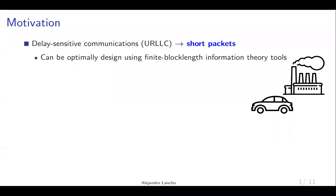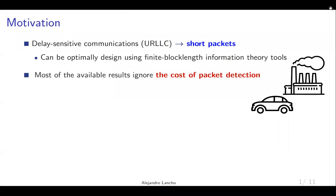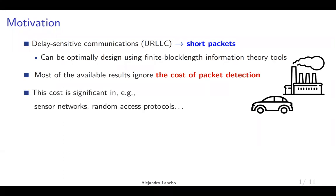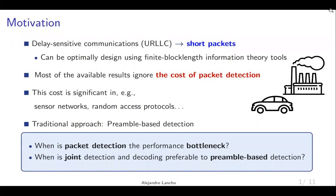One of the big groups of services that will dominate the next generations of wireless communication systems, sometimes referred to as ultra-reliable low-latency communications, presents stringent latency constraints which require the use of short packets. During the last years it has been shown how to optimally design short packet communications by means of finite blocklength information-theoretical tools. However, most of the available results ignore the cost of packet detection, that is the cost of distinguishing noise from an incoming data packet. In some applications such as sensor networks or random access protocols, this cost is significant. The traditional approach to tackle this problem is to use a preamble dedicated to detection in each packet.